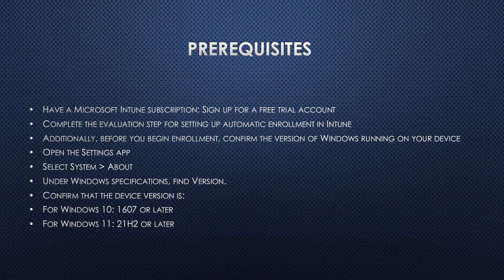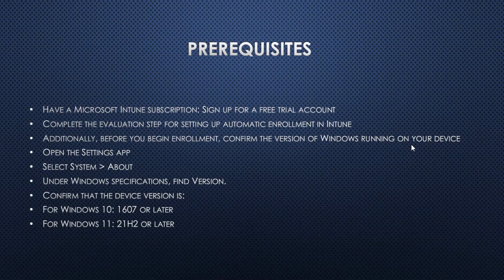If you want to enroll your Windows 11 or Windows 10 device, you must meet these prerequisites. First, you must have a Microsoft Intune subscription, which you can get by signing up or getting a free trial account. Additionally, confirm the version of Windows running on your device — for Windows 10 it should be version 1607 or later, and for Windows 11 it must be 21H2 or later.